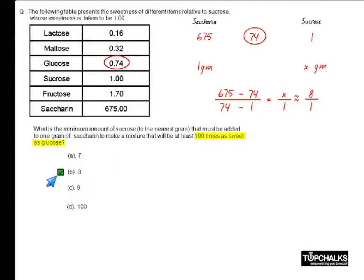You could also look at this question in a slightly different form, which can be applied to any questions that have something to do with mixtures and solutions. I have 675 here, the resultant is 74, and the sweetness of sucrose is 1. This distance on the number line is 73, this distance on the number line is 601.